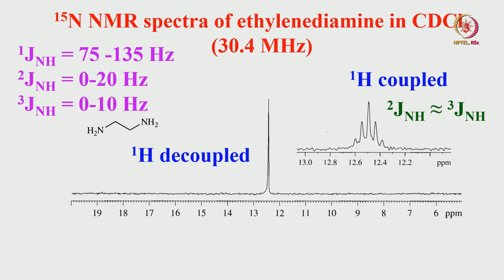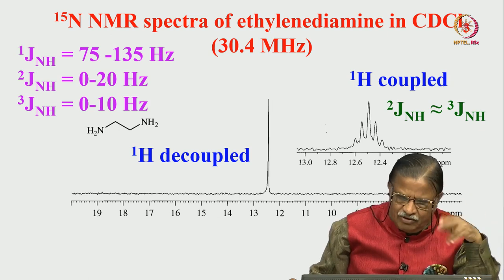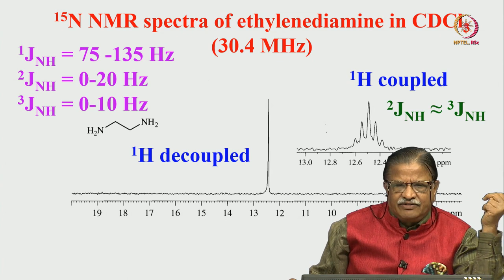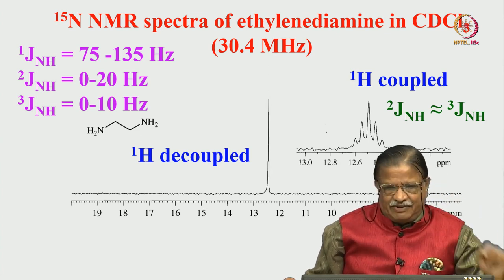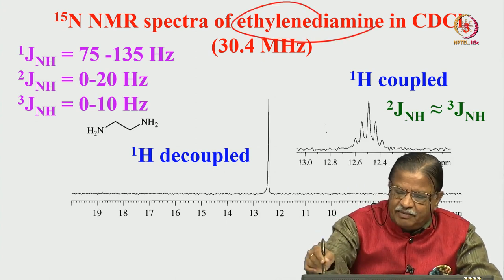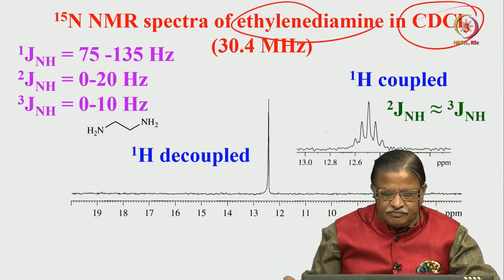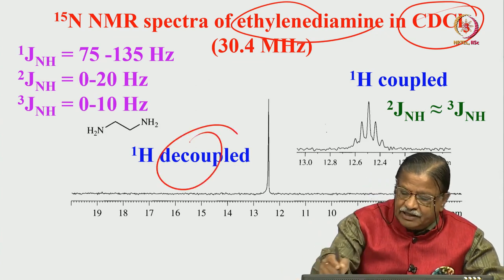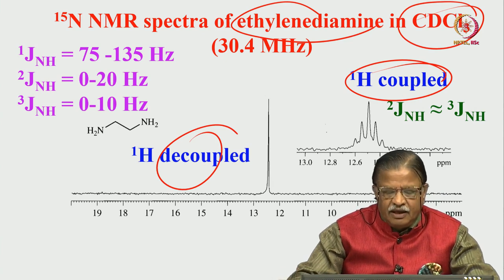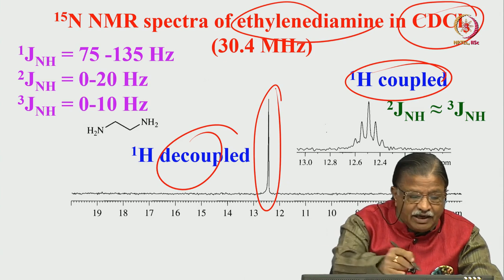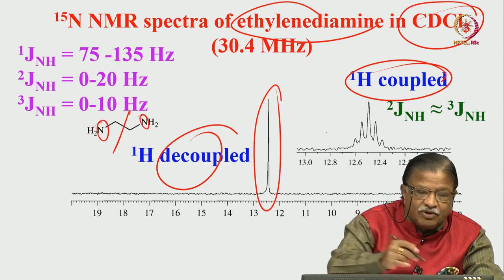Taking the nitrogen-15 NMR spectrum in natural abundance is a fairly difficult task because nitrogen-15 abundance is only 0.37 percent. It is also very difficult to see unless you label the system. It also has a negative magnetic moment, so we need a lot of NOE enhancement. This example is ethylene diamine in CDCl3. There are two spectra: one proton-decoupled and one proton-coupled. In the proton-decoupled case, you get a single peak because there are only two nitrogens, both chemically equivalent.